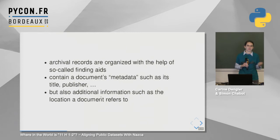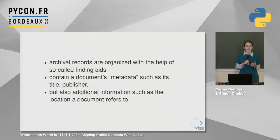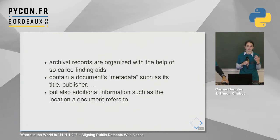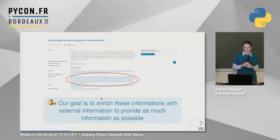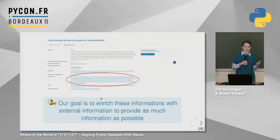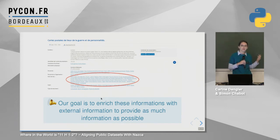A brief introduction to archival sciences: documents are organized with the help of so-called finding aids, which are basically collections of metadata about a document — not the document contents itself, but information such as who published the document, who the document is referring to, and what place it refers to. A finding aid looks like this: there is a brief summary, a description of the publisher, and also persons and places — the people and locations referred to in the document.